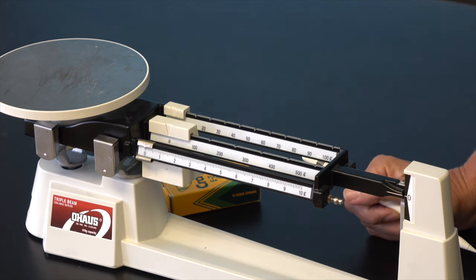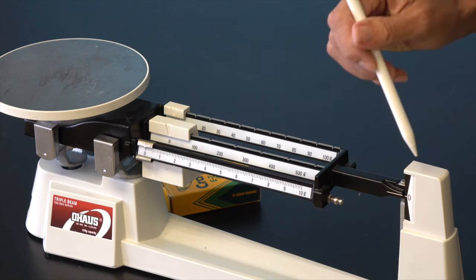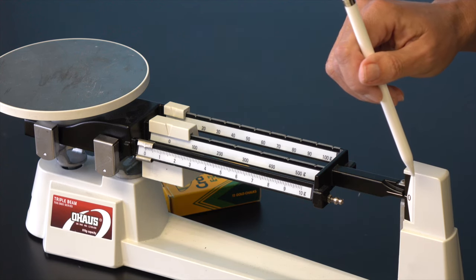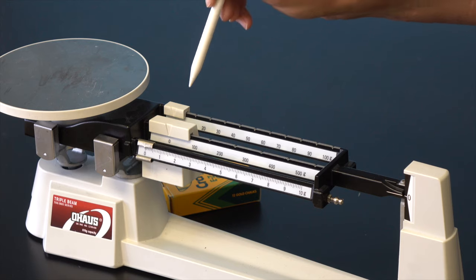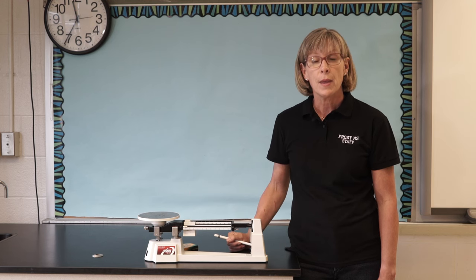When measuring mass, the first thing to do is to make sure that your pointer lines up exactly with the zero while the riders are each on zero. If that's not the case, tell your teacher so that he or she can make the appropriate adjustment.